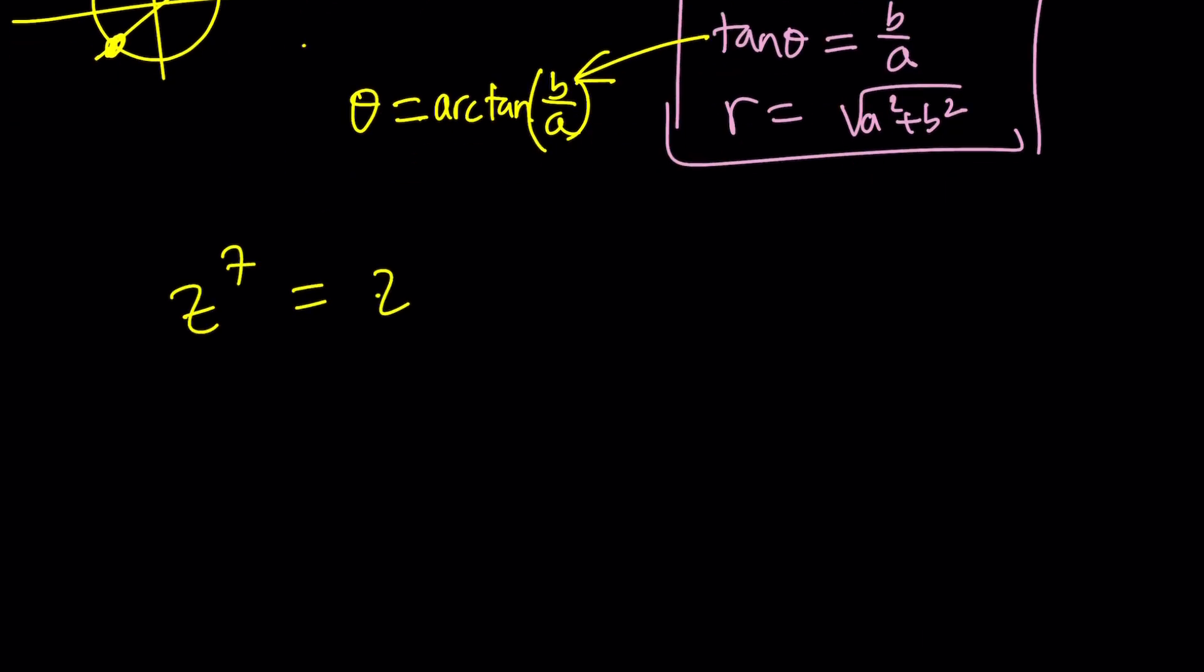We're going to use the polar form. We have z to the seventh equals z. I'm going to replace z with r e to the i theta and then raise it to the seventh power. It makes things a lot easier thanks to Euler. Euler is the best, the greatest mathematician of all times in my opinion. He came up with the most beautiful formula. Sorry if you can hear that car revving in the background.